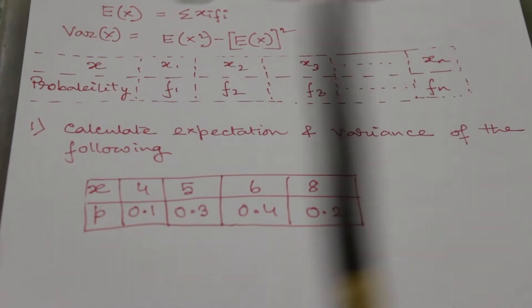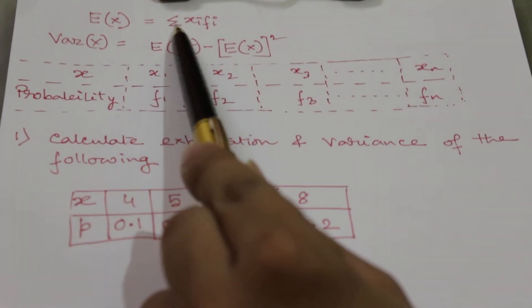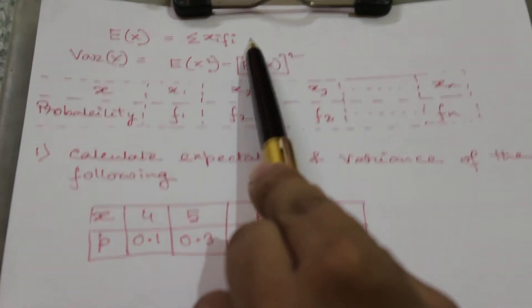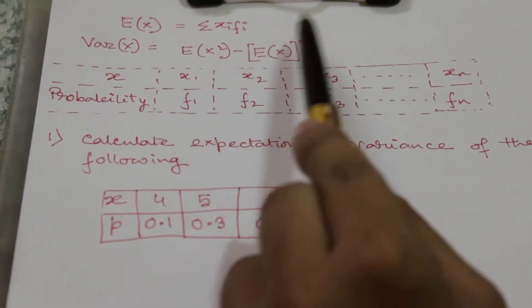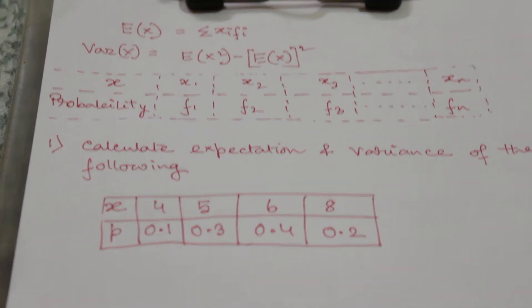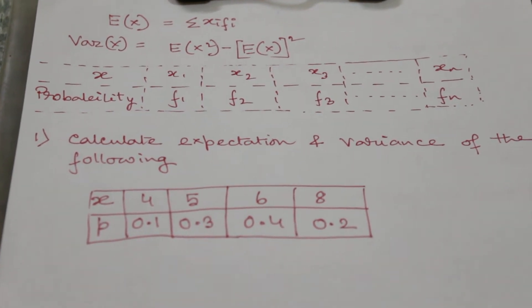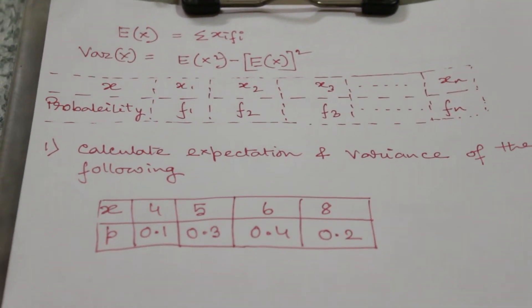So the expectation or mean in this distribution will be summation of xi into fi, and variance will be E(X^2) minus [E(X)]^2. Let us illustrate with an example. This is the table. We have to calculate its expectation.